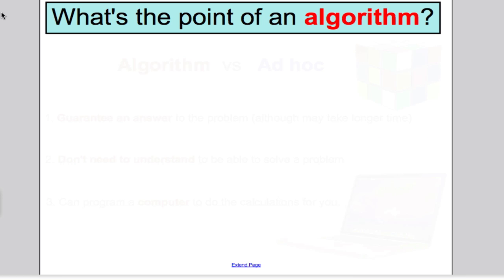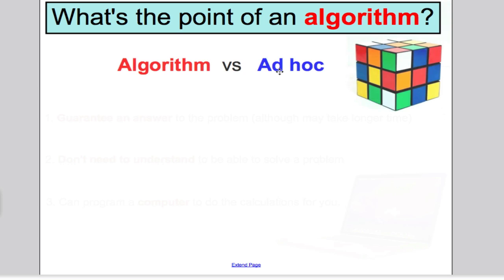So an algorithm is precise, well-defined, and finite, and it's a set of ordered instructions which, when followed, solve a problem for you. Next thing, what's the point of an algorithm? Why would you use one? Why not just solve problems by ad hoc methods? I'll show you the difference between an algorithm and using ad hoc methods. Ad hoc is just trial and error, trying to see if you can solve a problem without any sort of instructions.